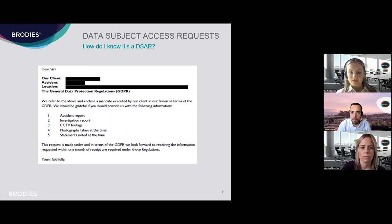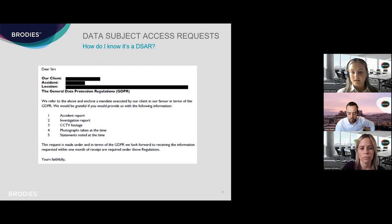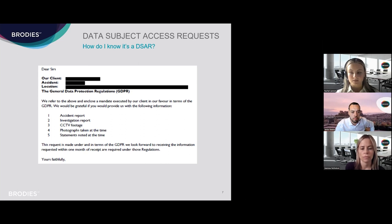A key feature of a request is that it must purport to ask for the requester's own information. Requests, particularly in the context of accidents, may try to ask for a range of information to assist the requester's solicitor to assess prospects of success. While other information and documents may be disclosable further on in the claims process, it is important to treat a DSAR at this stage solely under the data protection legislation. For example, a request for a wet weather policy or other organisational document wouldn't necessarily be within scope at this point.